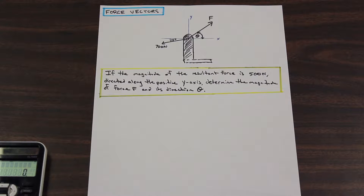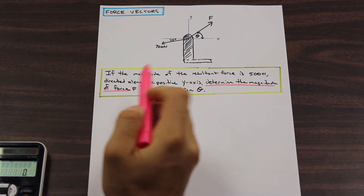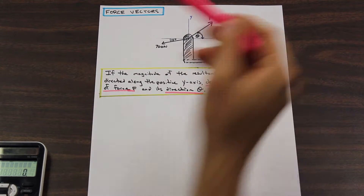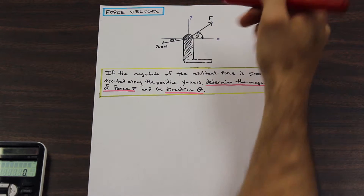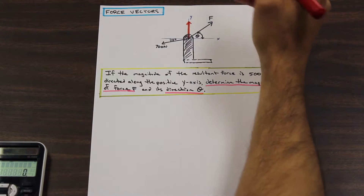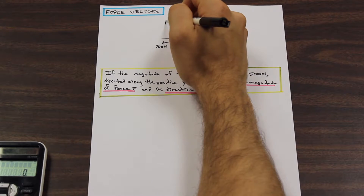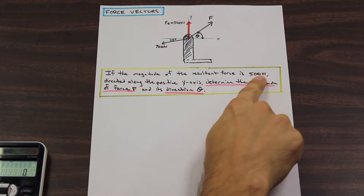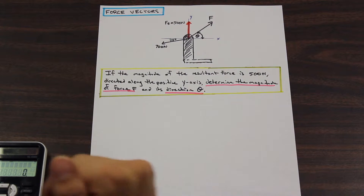So, read the question and pinpoint exactly what the question is looking for. It wants us to determine — I'm just going to highlight this in pink — the magnitude of force F. That's the first thing we're looking for. And we're looking for the angle theta, which is the angle between the positive x-axis and vector F. The important thing to note is that we're given the magnitude of the resultant force FR, and we know that's equal to 500 newtons. First read the question, identify the given information, include it in the sketch, then start the question.